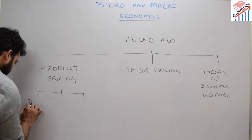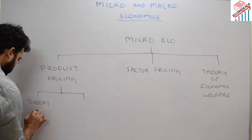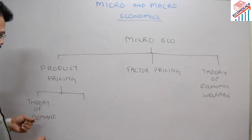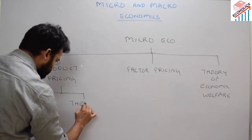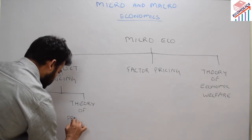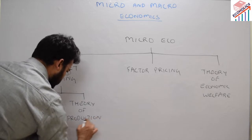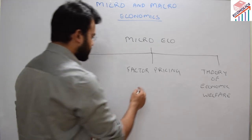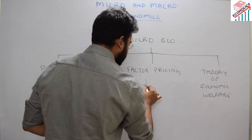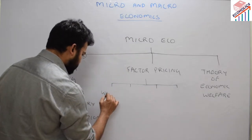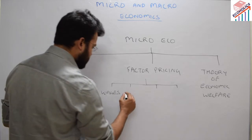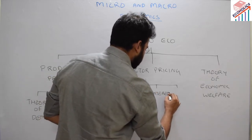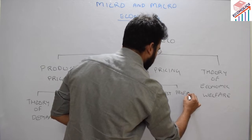Under product pricing we have two important sub-heads: theory of demand and theory of production and cost. Under factor pricing there are four important theories: theory of wages, theory of rent, theory of interest, and theory of profit.